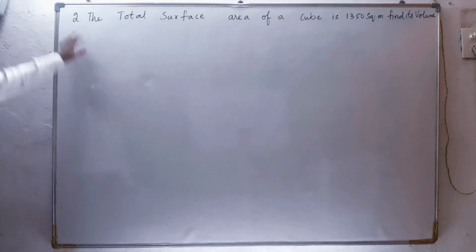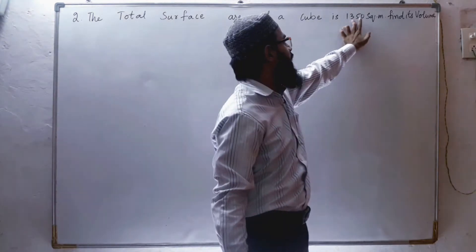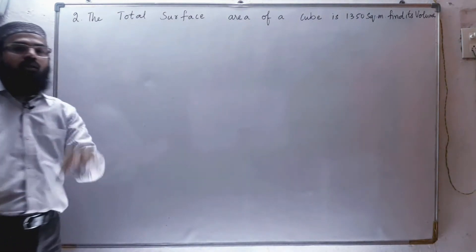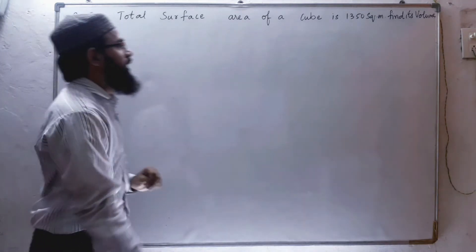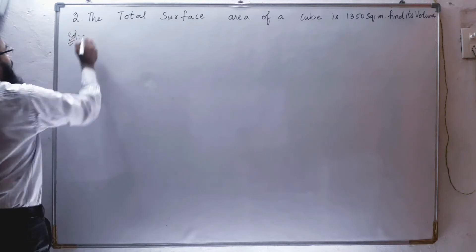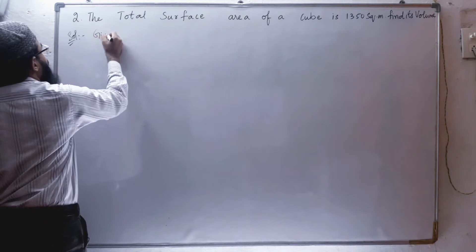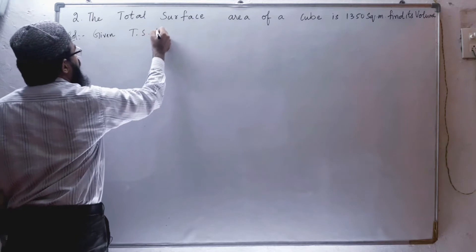Exercise number 10.1, second problem. The total surface area of a cube is 1350 square meters. Find its volume. They have given total surface area and now we have to find the volume. So let us solve this in solution. Let us write what is given.